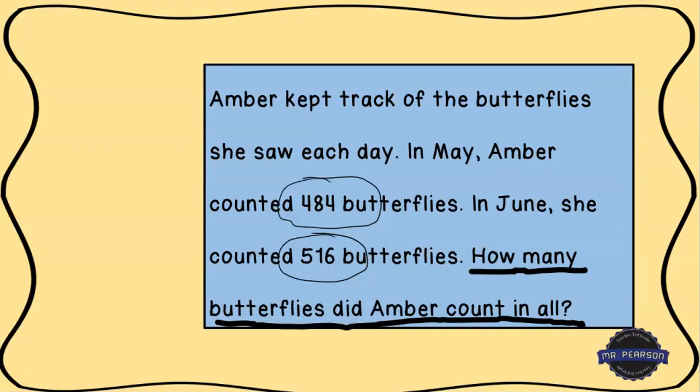After we've identified the numbers and underlined the question, the next thing we're going to do is draw a box around any important words. As I'm reading through, I see the phrase 'count in all.' Because we need to know how many total butterflies she was dealing with, that means I'm going to end up adding those two numbers together. This is going to be an addition problem — we're looking for the sum.